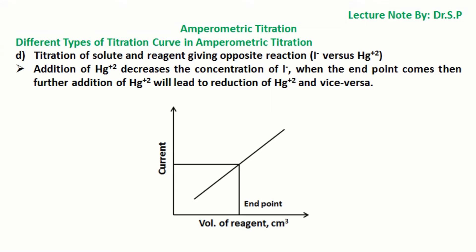Titration of solute and reagent giving opposite reaction, that is iodide ion I⁻ versus mercuric cation Hg²⁺. Addition of mercuric cation Hg²⁺ decreases the concentration of iodide ion I⁻. When the end point comes then further addition of mercuric cation Hg²⁺ will lead to reduction of mercuric cation Hg²⁺ and vice versa.